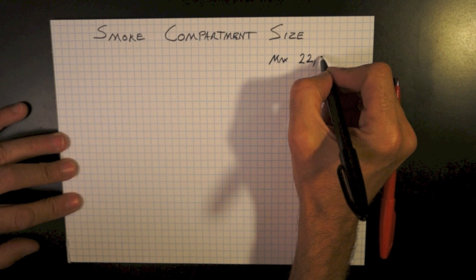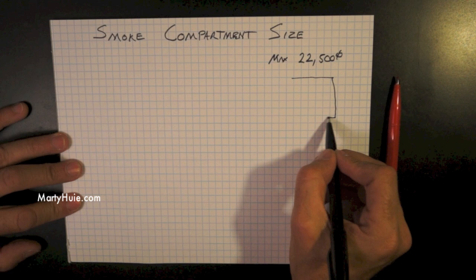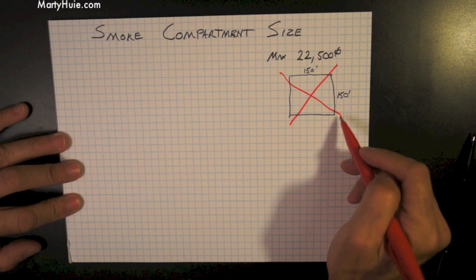The maximum size of a smoke compartment is 22,500 square feet. At one time, it had to fit inside of a square no greater than 150 feet by 150 feet. This is 22,500 square feet. This is no longer the case.